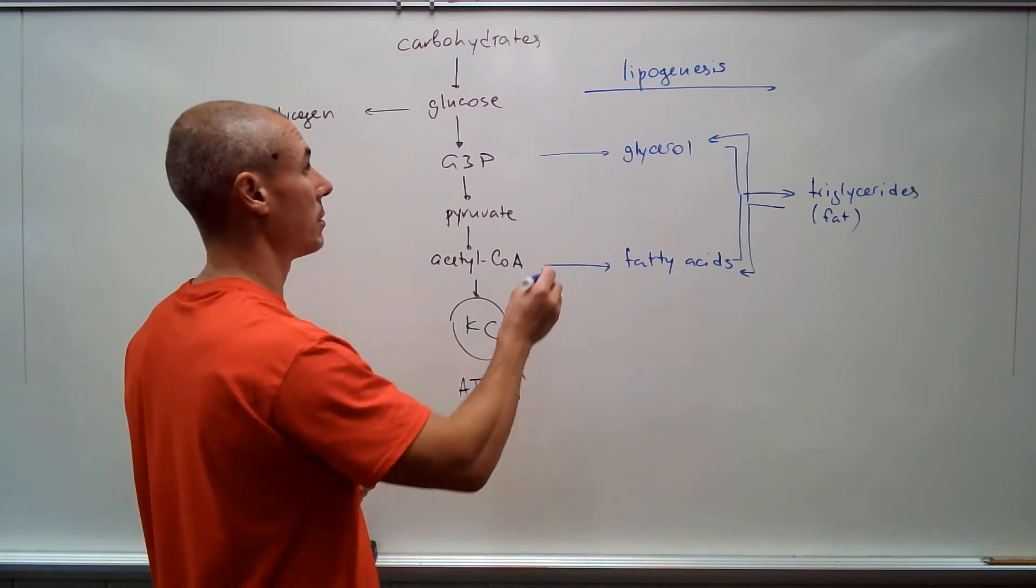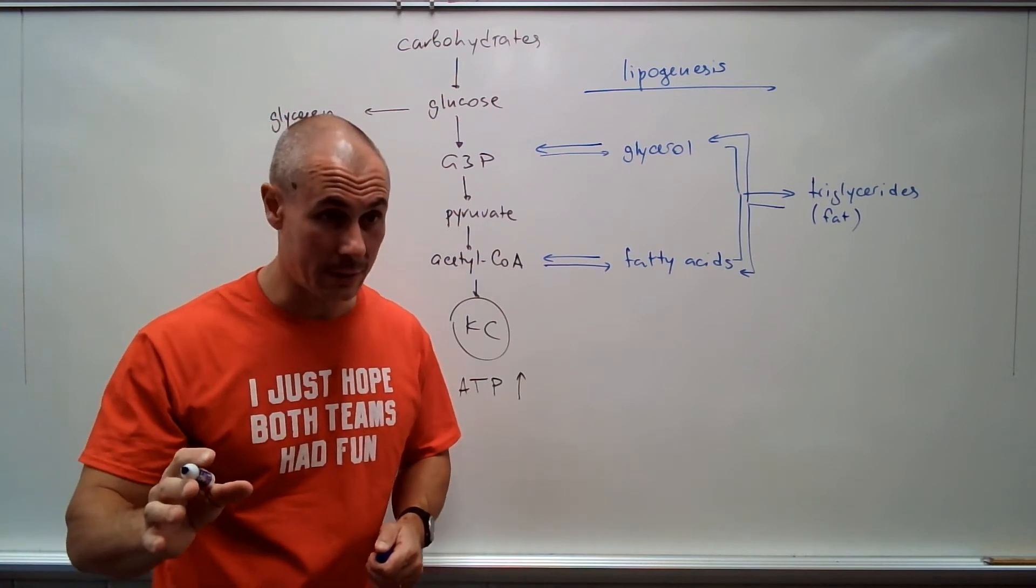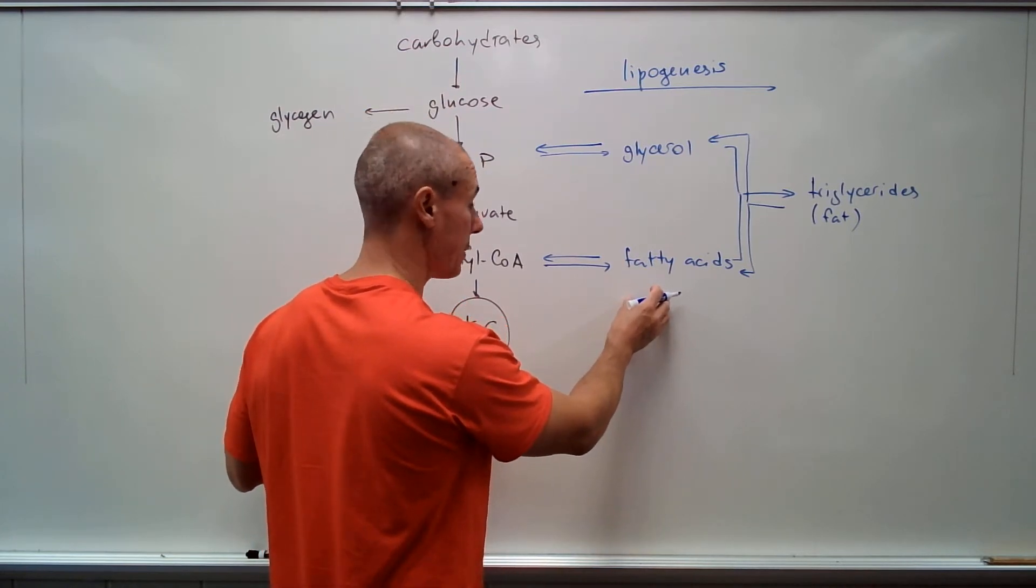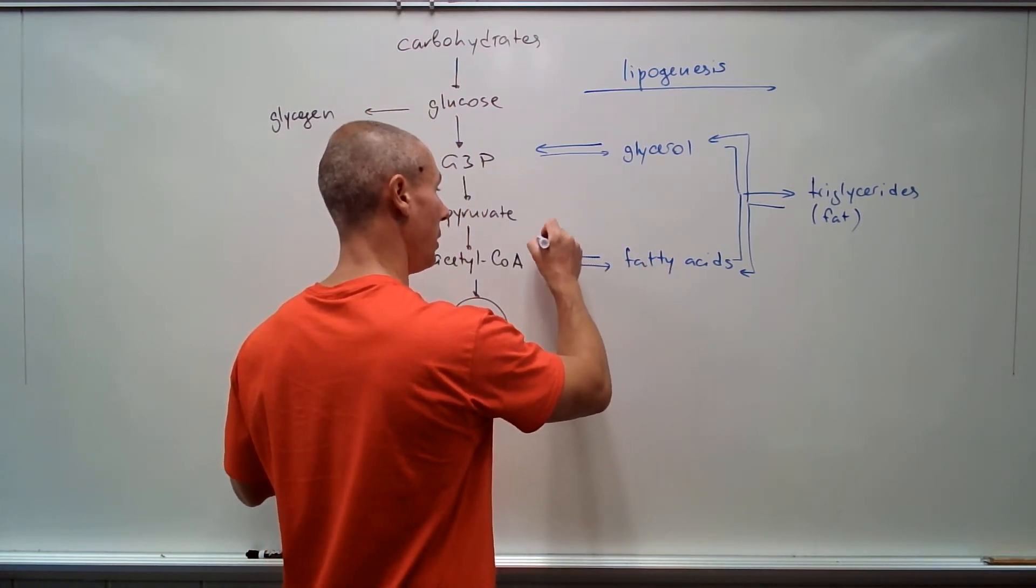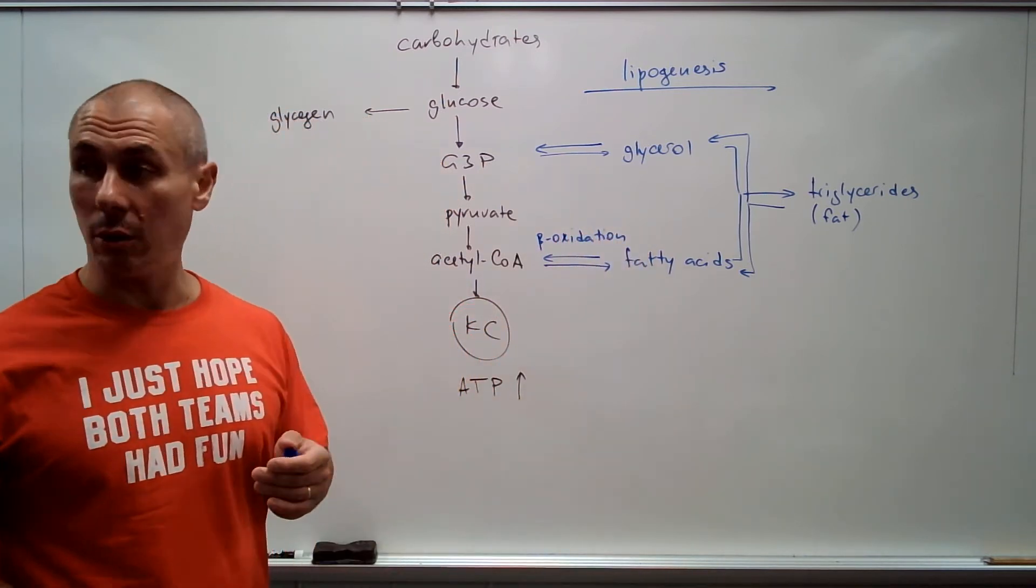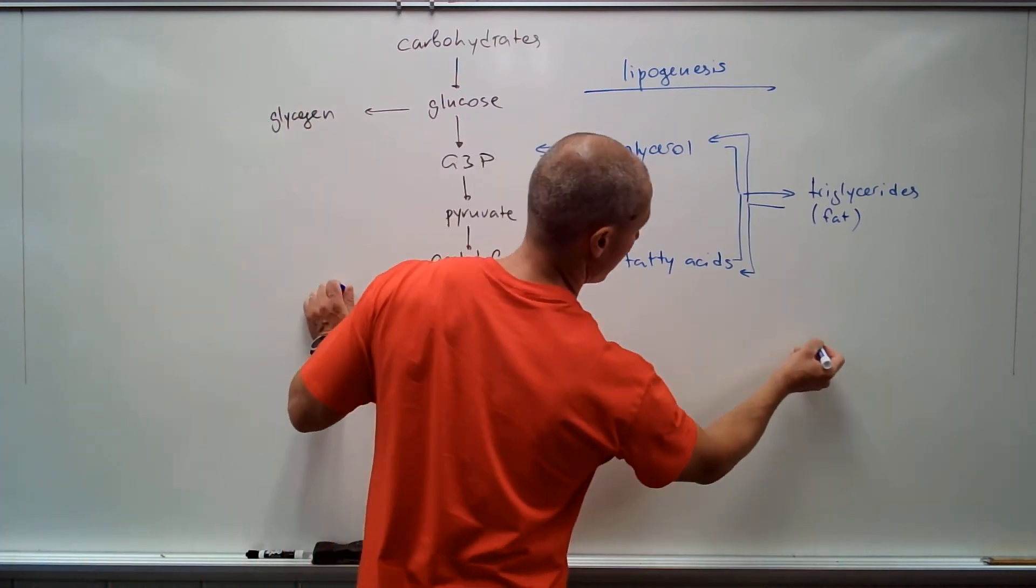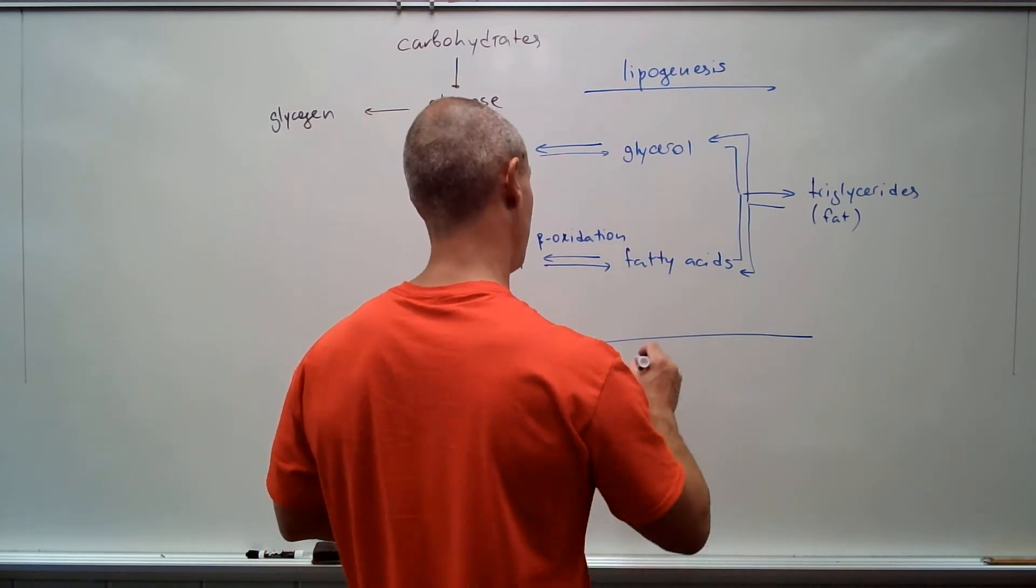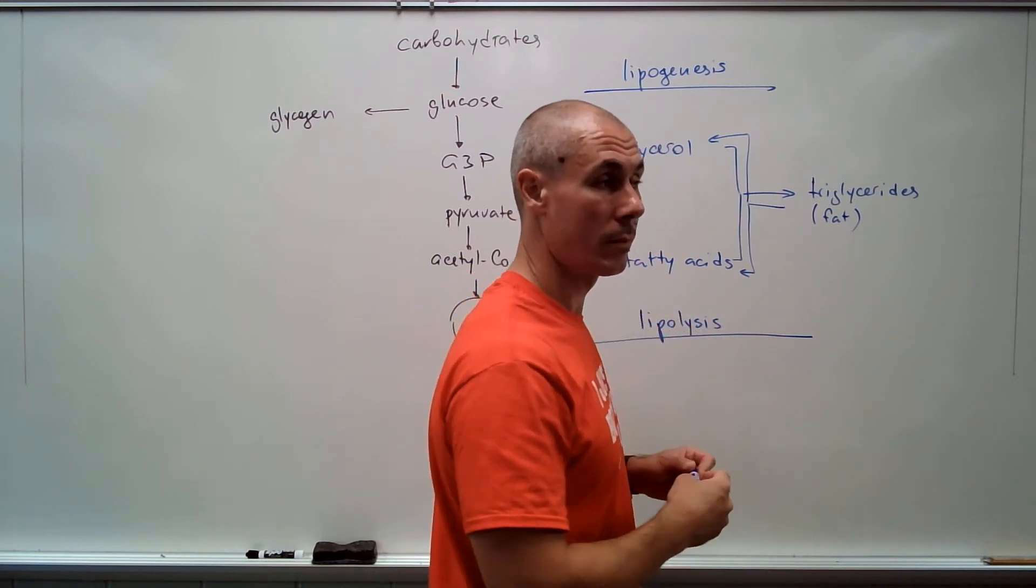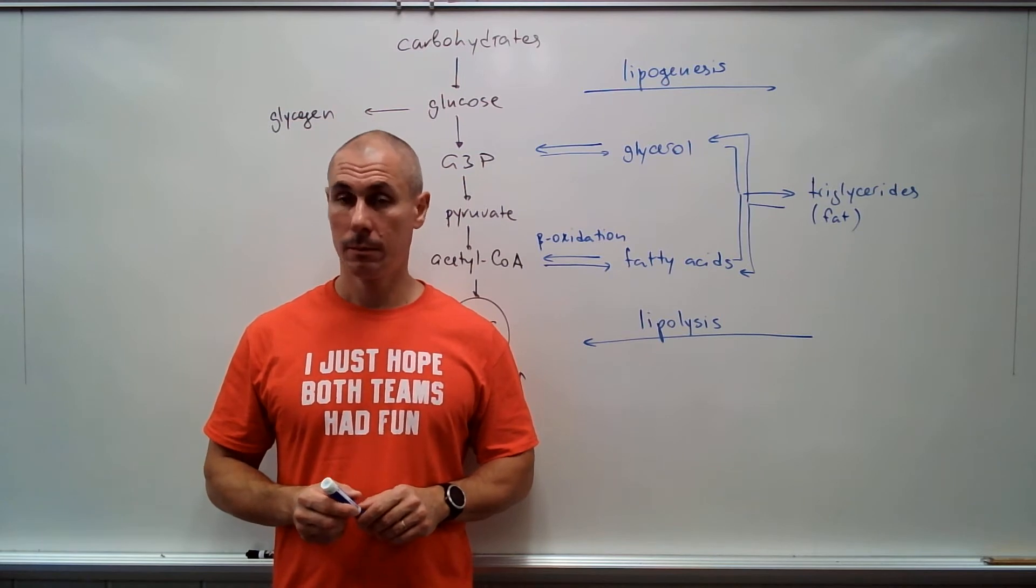You have a lot of incoming fat. Triglycerides are being broken down to glycerol and fatty acids. Specifically, fatty acids, in the process called beta oxidation, are converted into acetyl-CoA. In this direction, the process goes in this direction. This is called lipolysis.